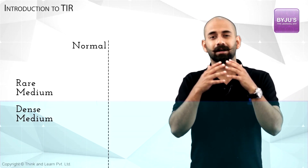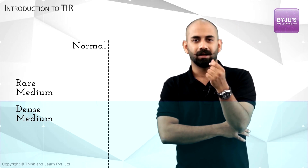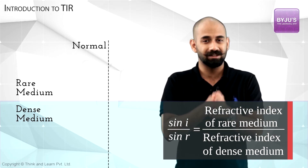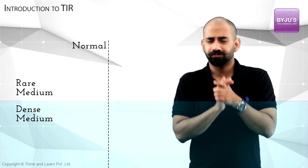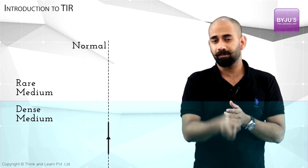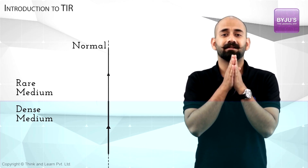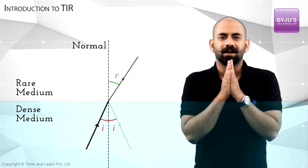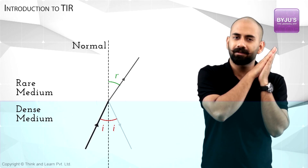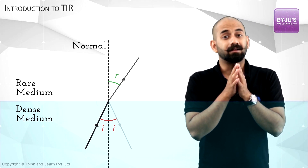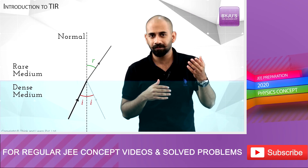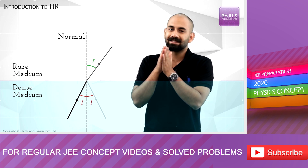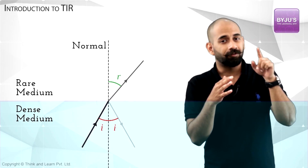Let's take the general case where light is moving from an optically denser medium to a rarer medium, so that sin(i) / sin(r) equals the refractive index of the rare medium with respect to the dense medium. When i = 0, the ray is incident perpendicular to the surface. We'll slowly increase the angle of incidence. There will be a refracted ray and a reflected ray, and since this is moving from denser to rarer, the angle of refraction will be greater. Increasing i further, the angle of refraction increases even further, so the refracted ray moves closer to the surface.